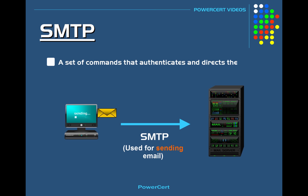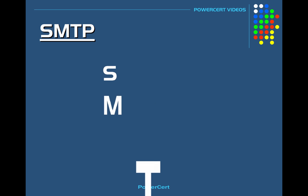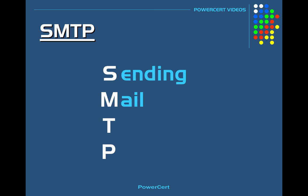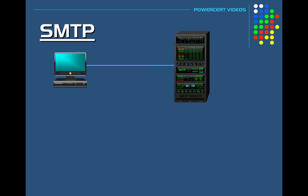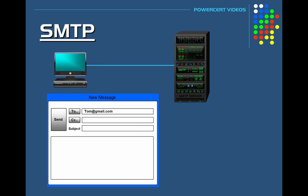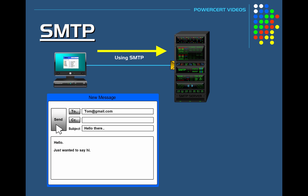SMTP is basically a set of commands that authenticates and directs the transfer of email. A good way to remember what SMTP does is by looking at the acronym and associating it with sending mail to people. For example, when you write an email using an email client such as Microsoft Outlook and hit send, the email travels from your computer to your email server using the SMTP protocol.